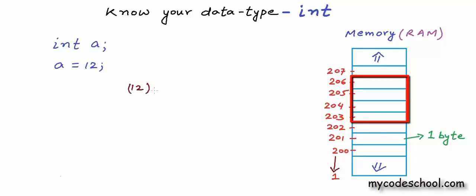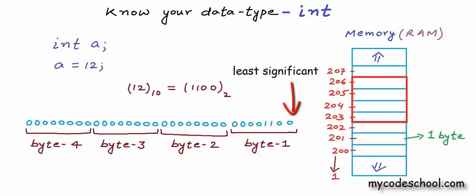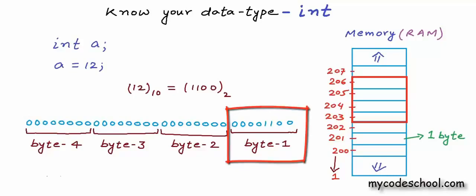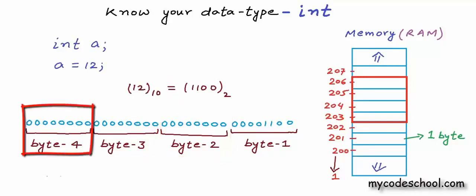12 in decimal is 1100 in binary. To write 12 in binary in 32 bits, the 4 rightmost least significant bits will be 1100 and all leading bits will be 0. In binary representation, the rightmost bit is the least significant bit and the leftmost bit is the most significant bit. The 8 rightmost bits form byte 1, the next 8 bits are byte 2, then byte 3, and byte 4. Byte 1 is the least significant byte and byte 4 is the most significant byte.